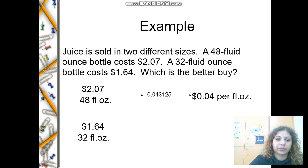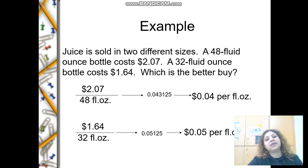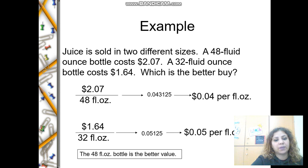To find the unit rate, I'm going to divide the denominators by themselves. Then I have to divide my numerator by the same number. 48 divided by 48 is 1, and 2.07 divided by 48 gives you 0.043125. The other one is 0.05125 when you divide the denominator by itself. Now you can compare: this is 4 cents per one fluid ounce, and here is 5 cents per one fluid ounce. Which one is the best buy? The 48 fluid ounce bottle is the better value.